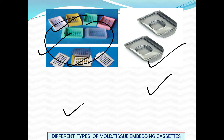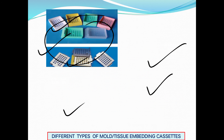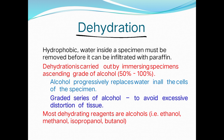After overnight washing in running tap water, the next step is dehydration. Water inside the specimen must be removed before it can be infiltrated with paraffin. Dehydration is carried out by immersing the specimen in ascending concentrations of alcohol — from 50% to 100%. Alcohol progressively replaces water in all cells; a graded series is used to avoid excessive distortion. Common dehydrating reagents are ethanol, methanol, isopropyl alcohol, and butanol.